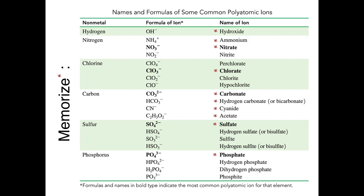There are many polyatomic ions and here's a list of them. Highlighted in red asterisks are the ones that I asked that you memorize for this class. You need to memorize its name, its formula, and its charge.